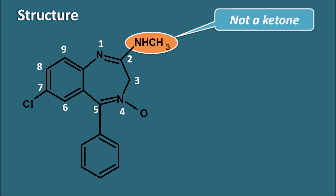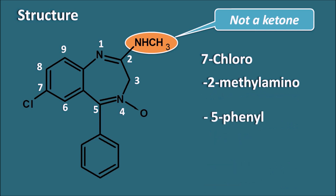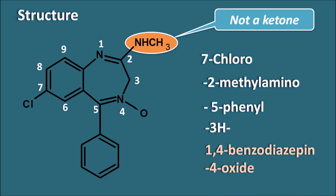The IUPAC name of this compound is: 7-chloro, 2-methylamino, 5-phenyl, 3H, 1,4-benzodiazepine 4-oxide. At the seventh position there is a chloro group, at the second position a methylamino group, at the fifth position a phenyl group, there is saturation at the third position (3H), and it is a 1,4-benzodiazepine with an oxide at the fourth position.